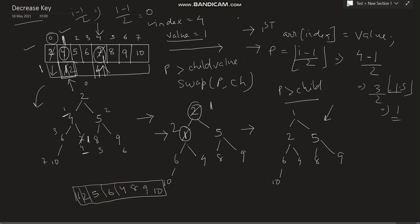Now suppose we want to increase the value at a particular location. For example, suppose the location has value 5 and we increase it to 15. In this case, if we are increasing a value in a min-heap, we need to perform the min-heapify operation. In the case of min-heap, for decrease key we compare the decreased value with the parent and perform a swap.